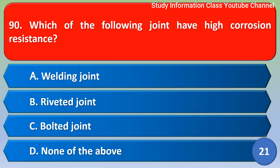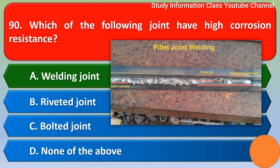Next question: Which of the following joints has high corrosion resistance? Option A welding joint, option B rivet joint, option C bolted joint, option D none of the above. The correct answer is option A, welding joint.